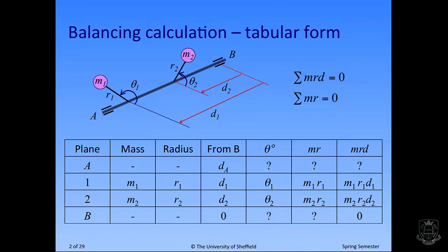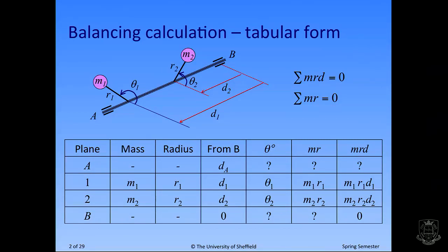In the table, the first column is the plane. There are four planes: a plane at A where the first bearing is, then a plane at the first mass M1, then a plane at the second mass M2, and finally a fourth plane at bearing B. When you fill in the table, look at the shaft and divide it up into the key points in sequence - basically anywhere where anything's happening. The next column is the mass; at the bearings A and B there is no mass, so just a dash.